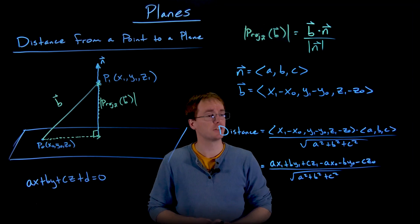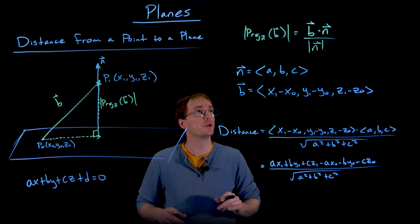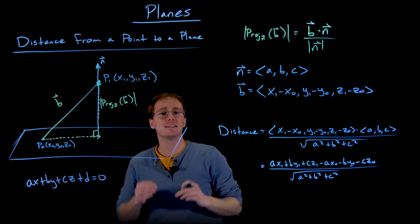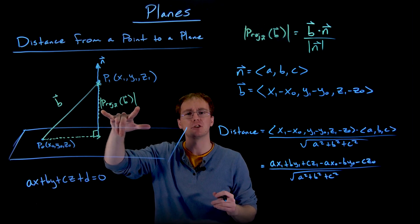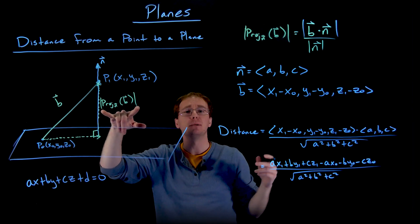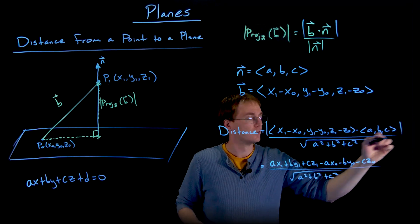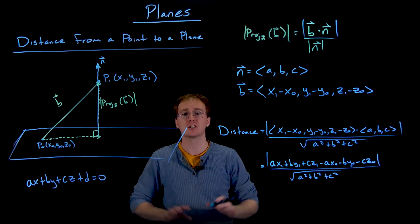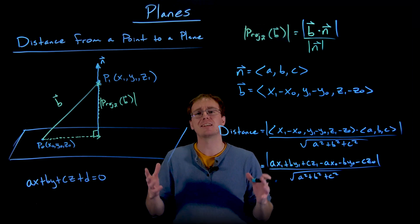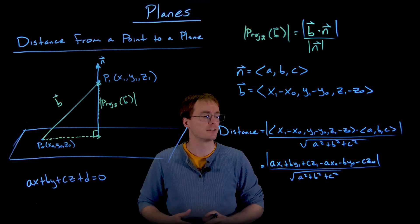Going from this line to this line I've just expanded the dot product in the numerator. And before I go through all those steps, let me just make an important note here. We're trying to find the projection of b onto n, which is this vertical distance in our picture, and this distance has to be positive. The dot product could actually be negative depending on the vectors b and n that are used, so we just have to throw some absolute value signs around this numerator to make sure we don't say our distance is negative — we just need to make it positive to have it make sense as a distance value.